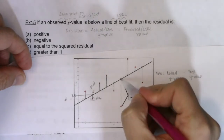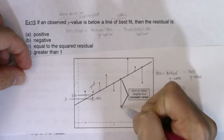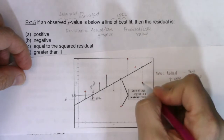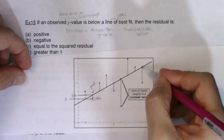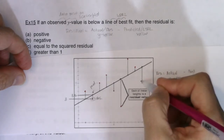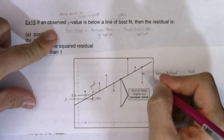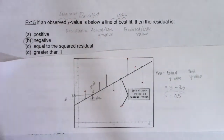You can apply the same logic to all the other points. In each case where the line is above the observed value — or the observed value is below the line of best fit — all of our residuals are going to be negative.